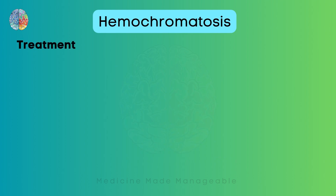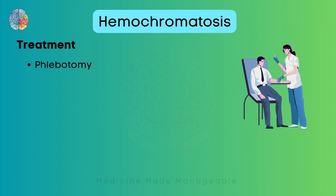Now what is the treatment? We can do phlebotomy, which is a simple procedure where blood is taken out. We may also use iron chelators, which can decrease the iron levels in the body.